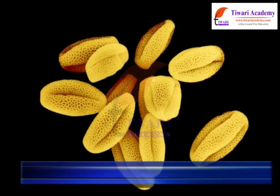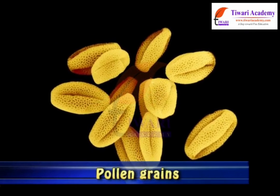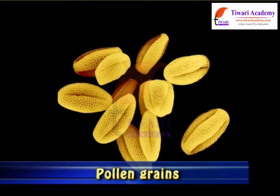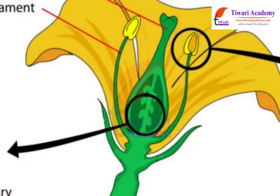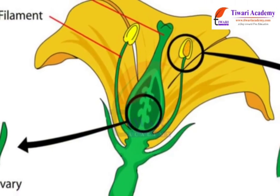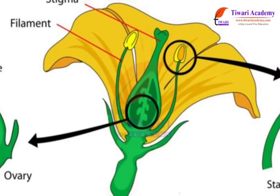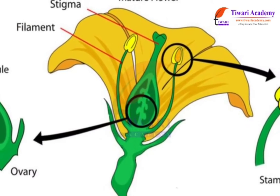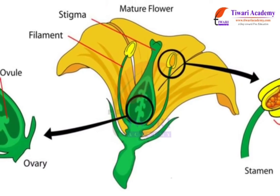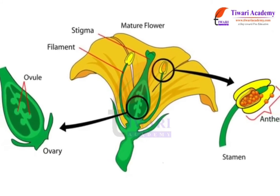Pollen grains are carried to the stigma of the pistil by the process of pollination. There, the pollen germinates and gives rise to a pollen tube, which grows down through the pistil towards one of the ovules at its base.